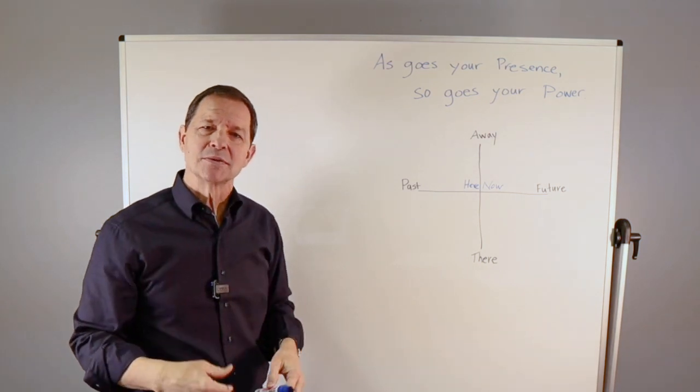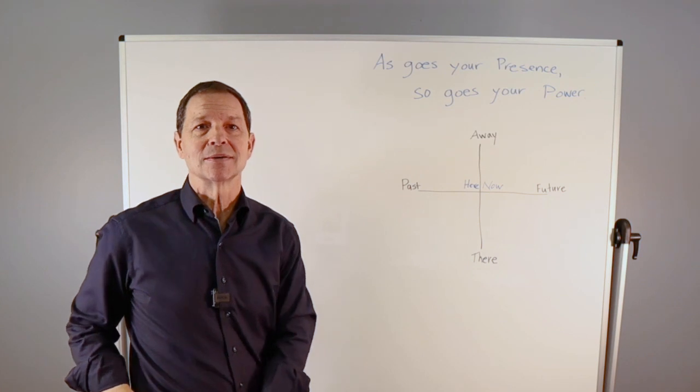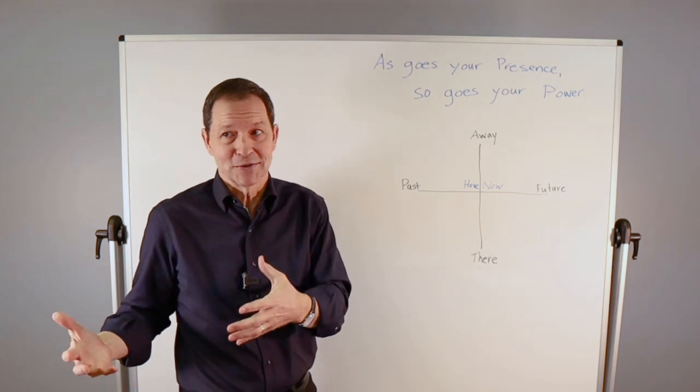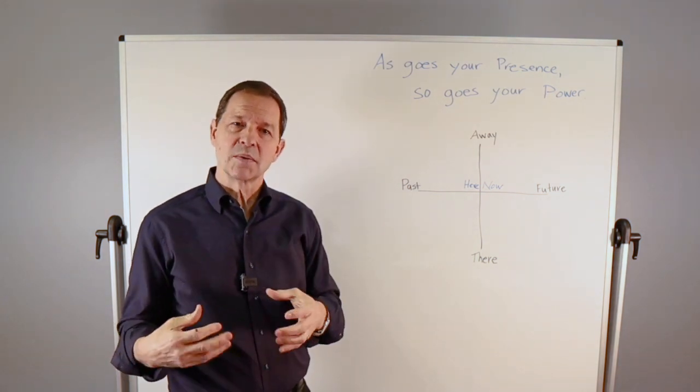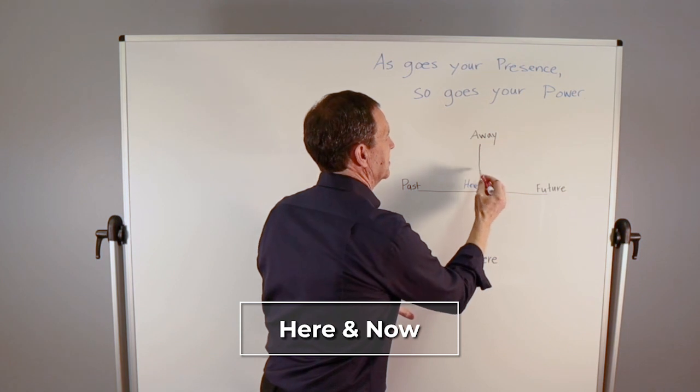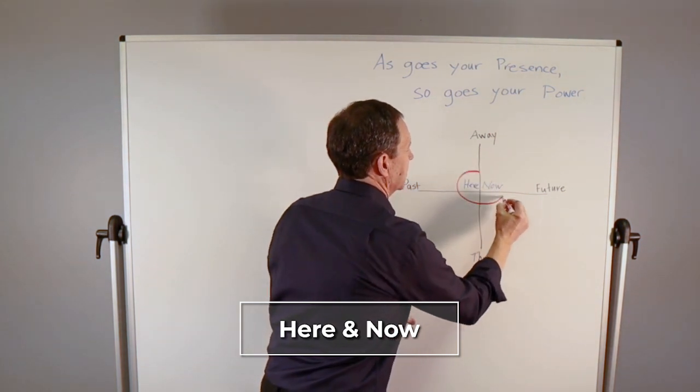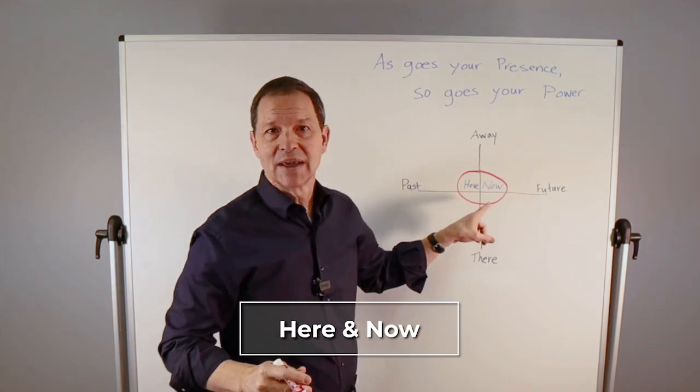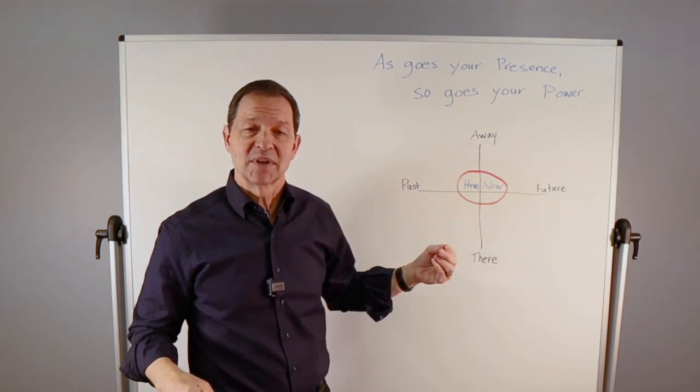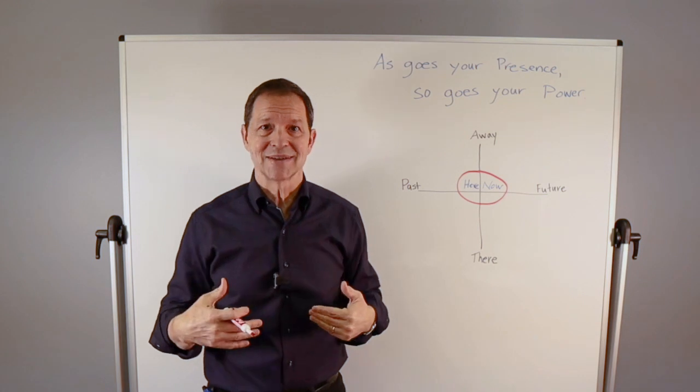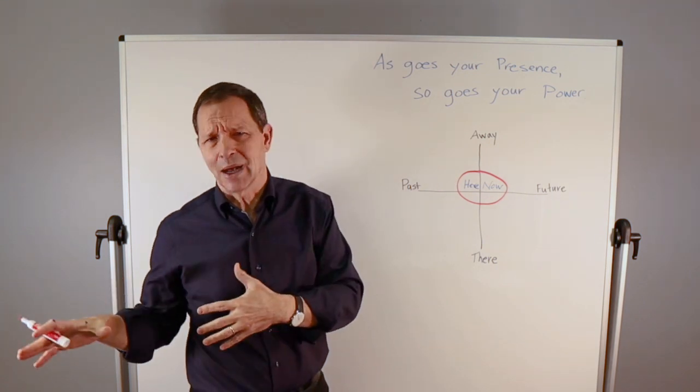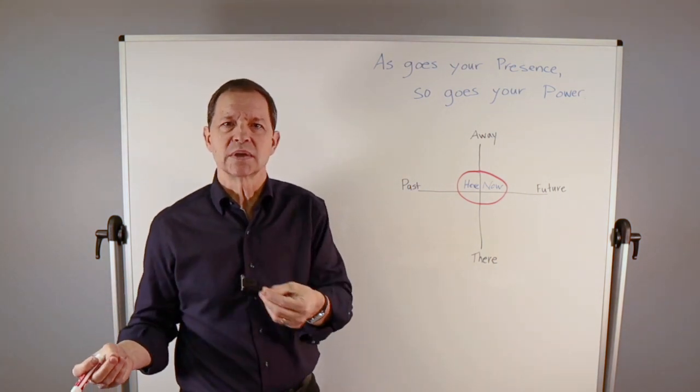And at this center point, at this intersection between the x and the y-axis, we have here and now. And I've been working with people to build their presence, their leadership presence for at least 15 years. One of the simplest ways I help them understand what is presence is just to always seek out the here and the now. And when you do that, this intersection of the here and the now on this particular model is what I would call the bullseye. This is where you have the maximum presence. But also, it's where you have the maximum power.